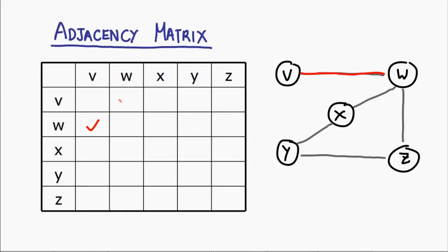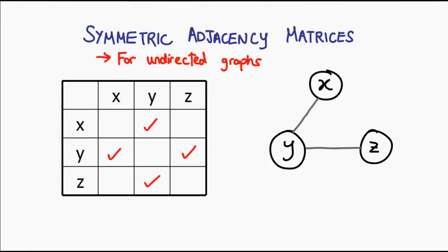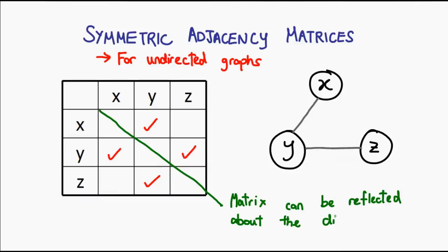Whenever two nodes are connected, we simply find that intersection on the table and check the box. In terms of programming, this will probably be a boolean array that is two-dimensional. It's worth mentioning that every edge in the graph actually maps to two ticks in our table. The reason is because we have an undirected graph — if x is connected to y, it implies that y is connected to x. So we end up with a symmetric adjacency matrix.